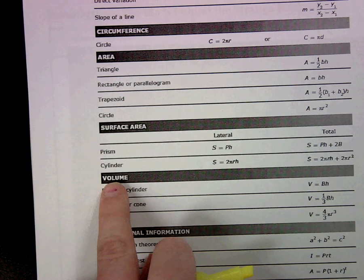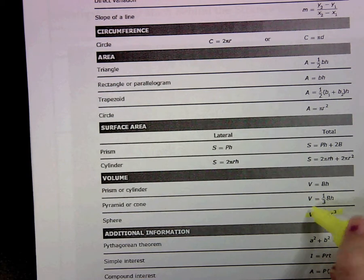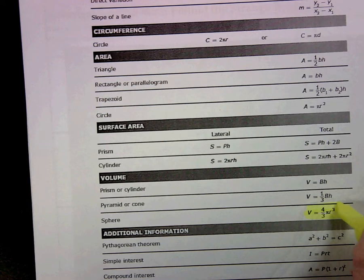So we're going to look under volume. We've got our sphere. And our formula is V equals 4 thirds pi R cubed.